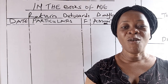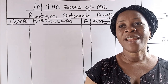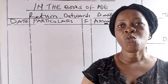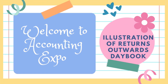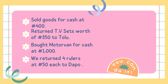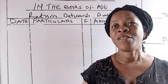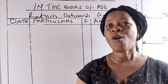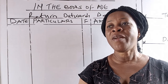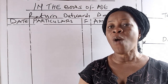Hello everyone, welcome to the Happiness Forum website. Today we shall be looking at a new set of questions. You are given the following record from the books of a day to prepare the appropriate subsidiary books of accounts. Record the transactions below appropriately.